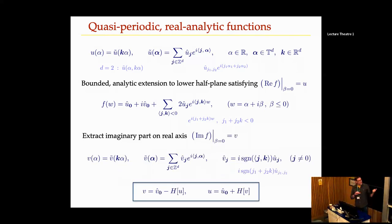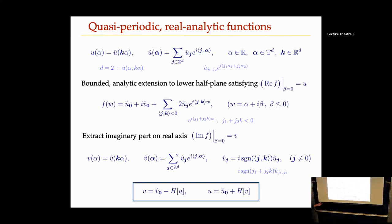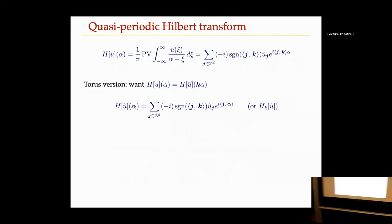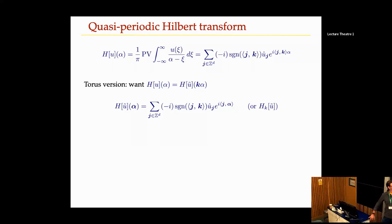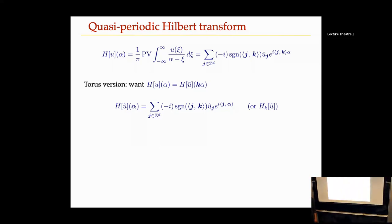To get the imaginary part given the real part — or vice versa — you multiply by the familiar symbol from the periodic Hilbert transform. The principal value definition of the Hilbert transform agrees with this, and you can apply the torus version of the Hilbert transform to the two-dimensional function using a two-dimensional FFT, then multiply by minus-i times the sign of the inner product of J with K.